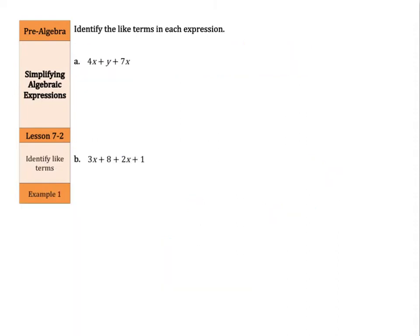Identify the like terms in each expression. We have 4x plus y plus 7x. Now, you notice in the previous example how I started boxing, circling, and triangling things, and that's a good way of going about this. So, if I look for my 4x, okay, it's my first term, I'm going to put a box around that. Do I have any other terms in this expression that have an x? Yes, this 7x. And I'm going to include that plus sign there. So, so far, I have 4x and 7x are my like terms.